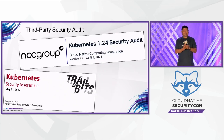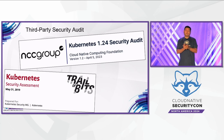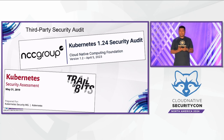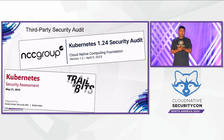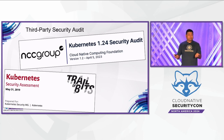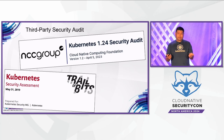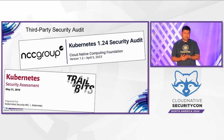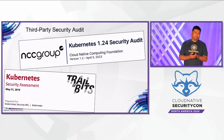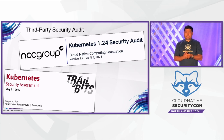Lastly, the third-party security audit subproject coordinates third-party security audits. The first one was published in 2019, based on Kubernetes 1.13.4, and the last one was published in April 2023, based on 1.24.0. We are currently scoping the next one. Let's take a look at a few findings from both audits.